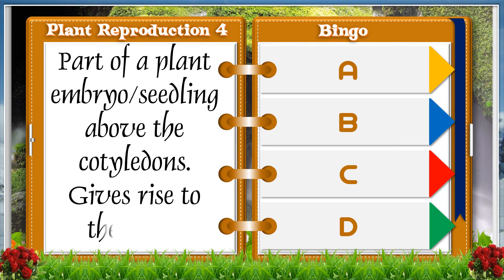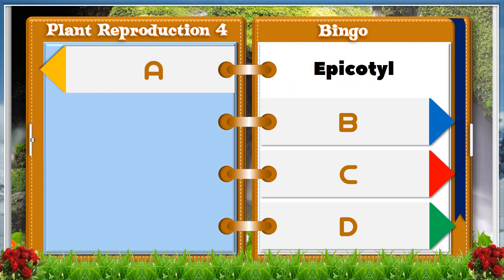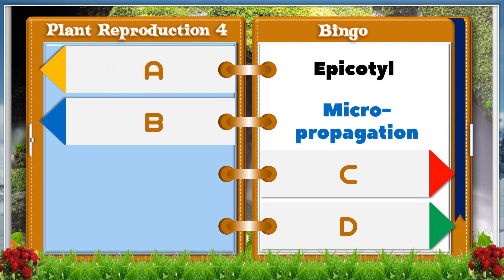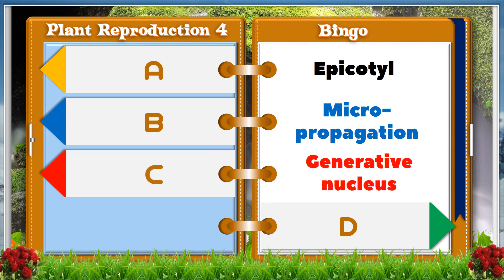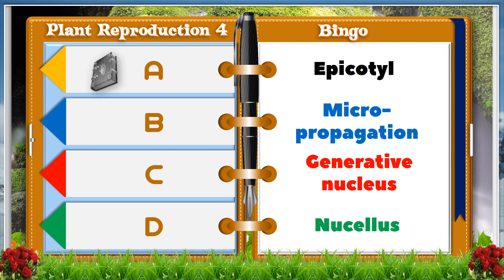Part of a plant embryo or seedling above the cotyledon, gives rise to the shoot. A. Epicotyl. B. Micro-propagation. C. Generative nucleus. D. Nucellus. And the answer is A, Epicotyl.